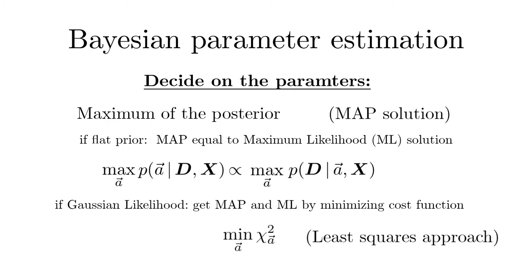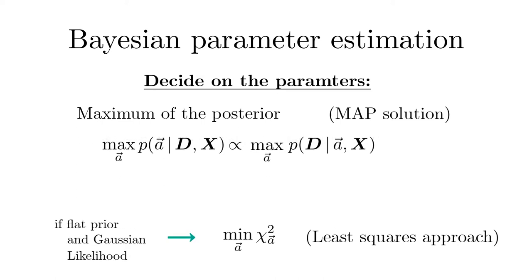If in addition the likelihood is Gaussian, then the MAP and the maximum likelihood solution is obtained by minimizing chi squared, which is the least squares method. This shows that the least squares approach is only applicable in the case of Gaussian experimental noise and if we have no or if we ignore prior knowledge about the parameters.